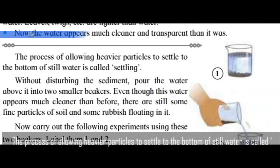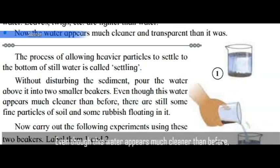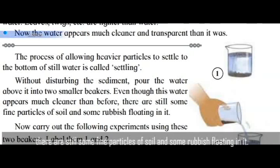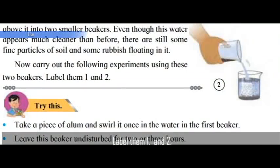Now the water appears much cleaner and transparent than it was. The process of allowing heavier particles to settle to the bottom of still water is called settling. Without disturbing the sediment, pour the water above it into two smaller beakers. Even though this water appears much cleaner, there are still some fine particles of soil and rubbish floating in it. Label the beakers one and two.